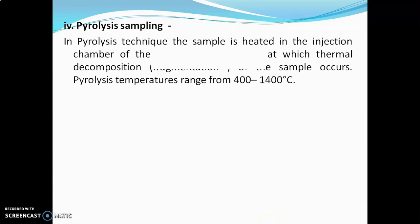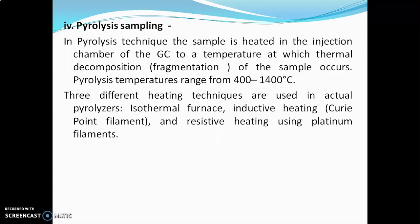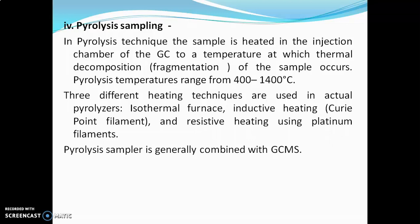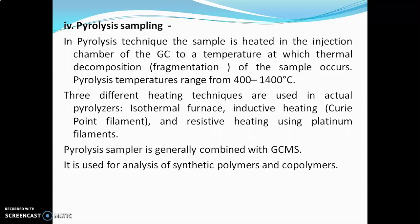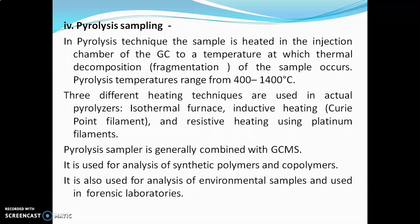In pyrolysis sampling, the sample is heated in the injection chamber of GC to a temperature at which thermal decomposition — that is, fragmentation — of the sample occurs. Pyrolysis temperature ranges from 400 to 1400 degrees Celsius, and higher temperature pyrolyzers are also available. Three types of heating techniques are used: isothermal furnace, inductive heating (curie point filament), and resistive heating using platinum filaments. Pyrolysis samplers are generally combined with GC-MS (gas chromatography-mass spectroscopy) and are used for analysis of synthetic polymers, copolymers, environmental samples, and in forensic laboratories.